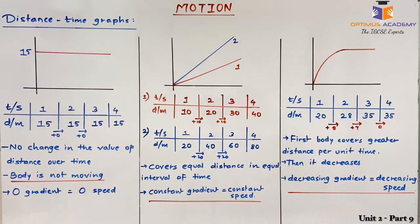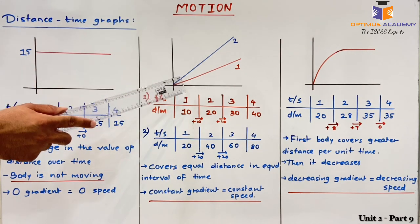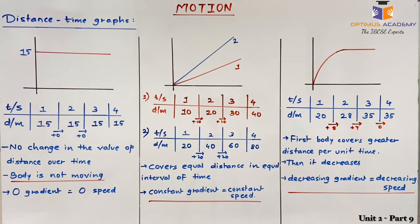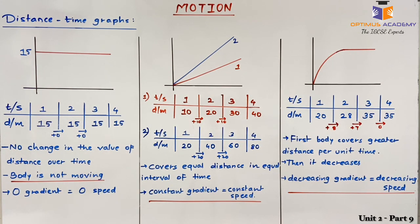I hope you are clear with all three examples: distance time graph with zero gradient, constant gradient, and decreasing gradient. Please note down all these graphs in your notebook, as we will need them while solving questions from past papers based on distance time graphs. Thank you.